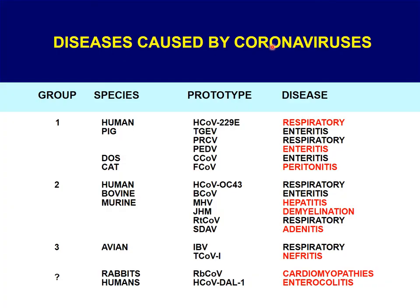Coronaviruses are quite common in the animal kingdom. They are classified into three groups and can infect many species, including cats, pigs, dogs, humans, cows, mice, birds, and rabbits. Some of the prototype coronavirus species include human coronavirus 229E, which causes the common cold, and human coronavirus OC43, which also causes the common cold. These coronaviruses usually cause respiratory or enteric diseases.